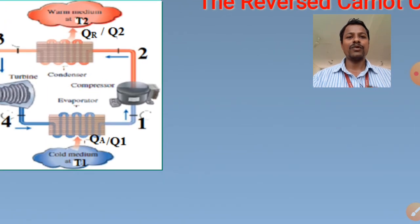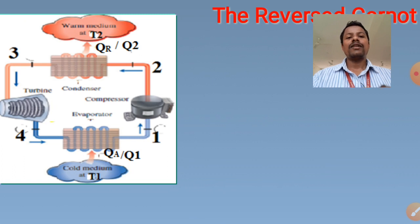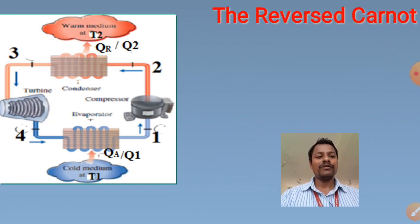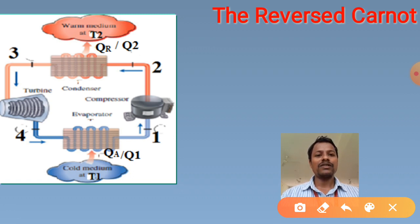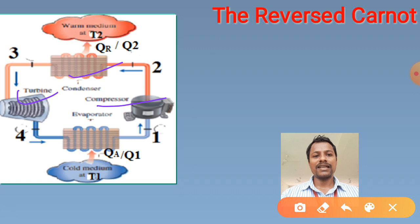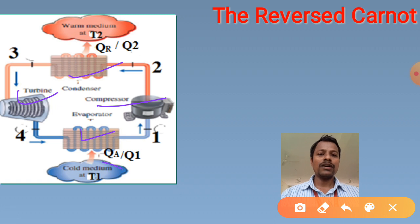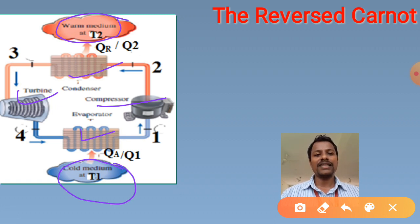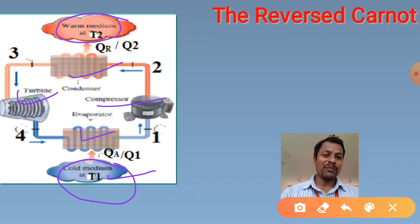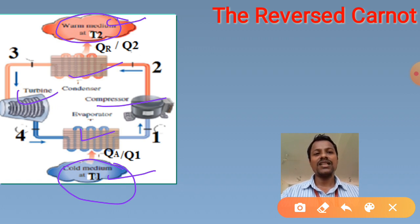We need to remove heat energy from the refrigerated space (low-temperature reservoir) and reject it into the high-temperature reservoir. For that, we use a refrigerator, which absorbs heat energy from the refrigerated space with the help of work input and rejects heat into the high-temperature reservoir. The practical components are: compressor → condenser → expansion valve → evaporator, all connected in a cycle.